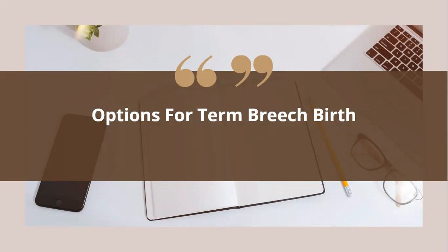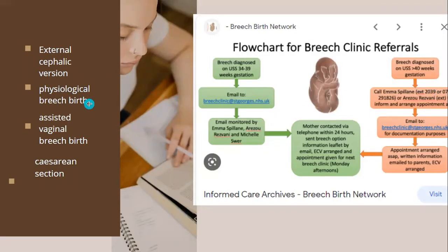When a patient comes into labor with breech in early labor, if the breech is non-engaged and the pelvis is adequate, you have done the ultrasound to check liquor, fetal weight, and placenta, then the options to discuss with the patient include external cephalic version, physiological breech birth, assisted breech birth, and cesarean section. In the new TOG 2033 update, there is the breech birth network in the UK, with a dedicated breech clinic designated on Monday afternoons for patients with persistent breech presentations.